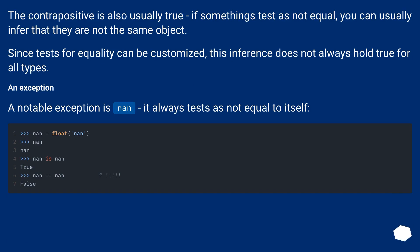The contrapositive is also usually true. If something tests as not equal, you can usually infer that they are not the same object. Since tests for equality can be customized, this inference does not always hold true for all types. An exception: a notable exception is NaN, it always tests as not equal to itself.